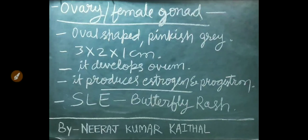The ovary is also known as the female gonad. It is oval-shaped, pinkish-gray in color, and 3 × 2 × 1 cm in dimensions. It develops the ovum and produces the important hormones estrogen and progesterone.